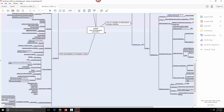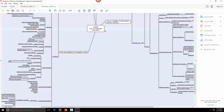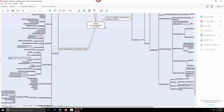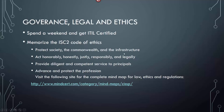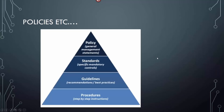Patent, trademark, copyright, and trade secret — there are two or three questions concerning those areas. They're really easy to remember. For policies: there's a policy, standard, guideline, and procedure. Policy is a general management statement — 'we need to do something.' A standard is specific and mandatory. Guidelines are best practice or recommendations. Procedures are step-by-step instructions. Remember those because they may cover a question or two on the test.